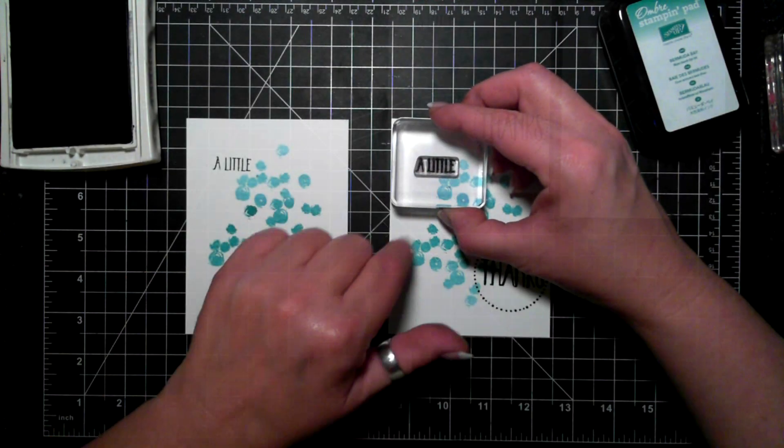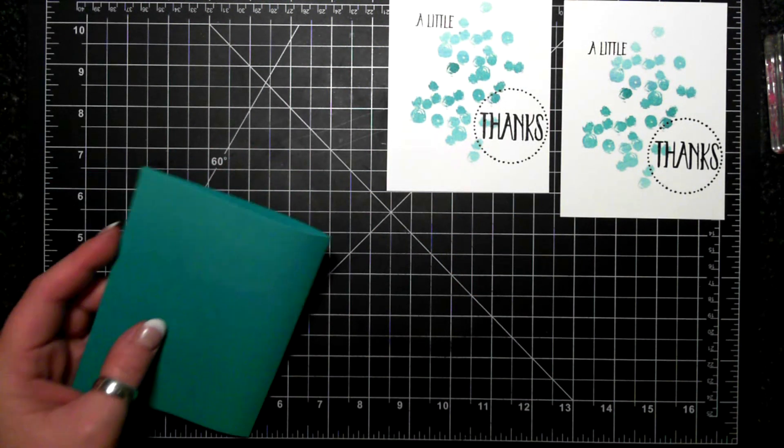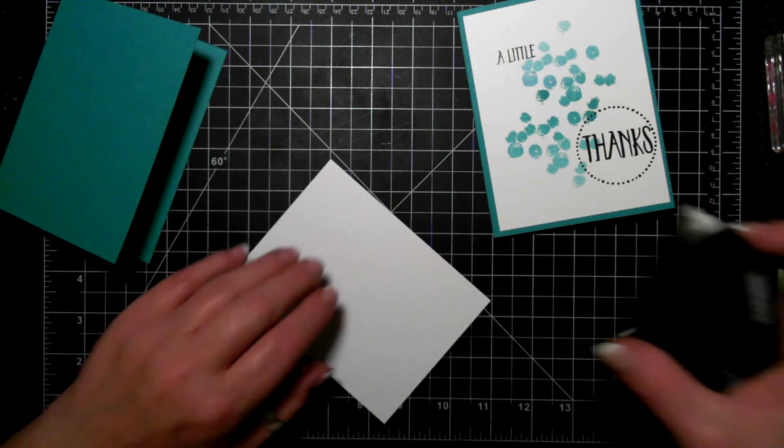So just a little fast fuse and attaching it to a Bermuda Bay cardstock. So that's my card for today.